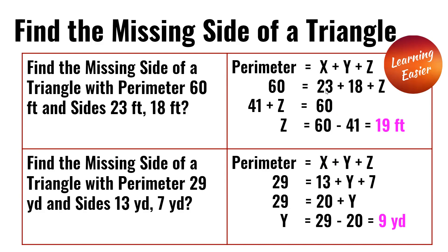60 is equal to 23 plus 18 plus z. 23 plus 18 is 41, so 41 plus z is equal to 60. 60 minus 41 is equal to 19 feet. 19 feet is the length of z.